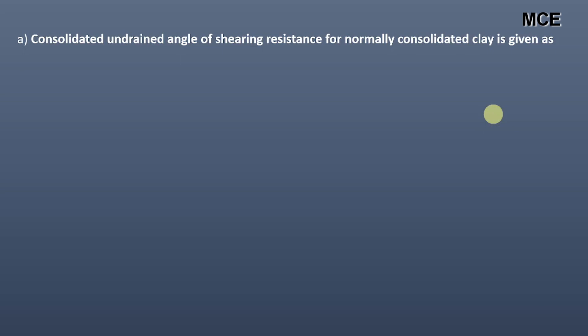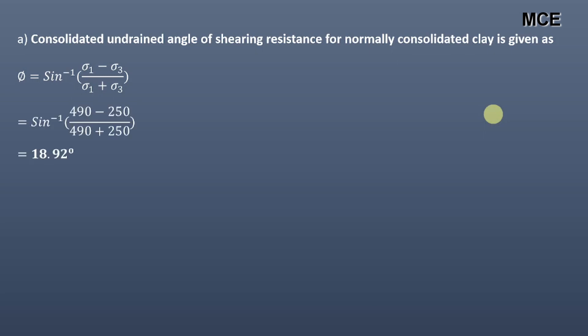First, the consolidated undrained angle of shearing resistance for normally consolidated clay is given as φ equal to sine inverse of (σ1 minus σ3) divided by (σ1 plus σ3). Putting the values of σ1 and σ3, we get the value of φ equal to 18.92 degrees.